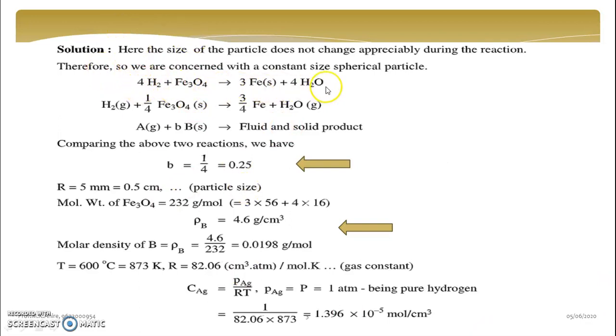Here the reaction is like this. Why we have divided reaction by 4, because we want reaction to be of this form: A in gaseous phase plus B times B in solid phase, which is given product.